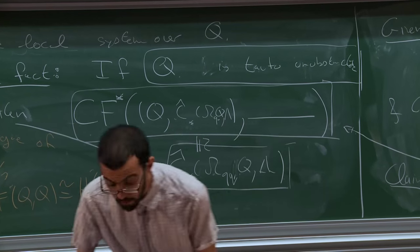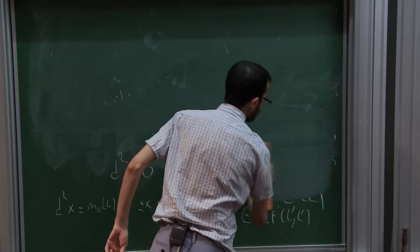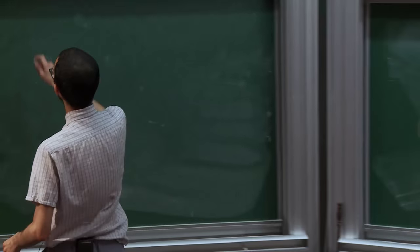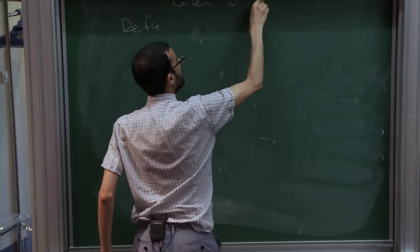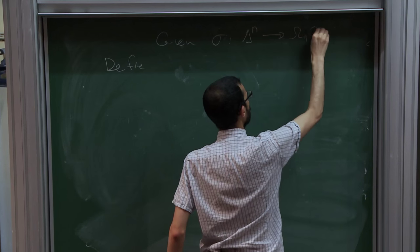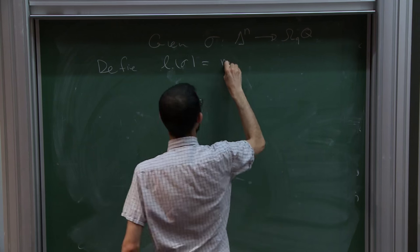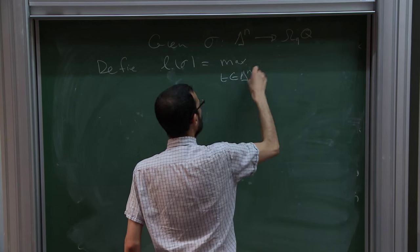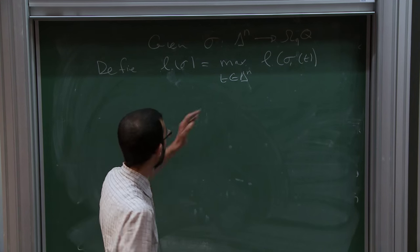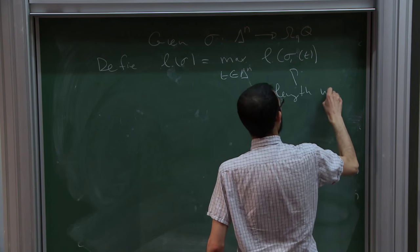First I will introduce something that is most natural from the point of view of symplectic topology, even though we will massage it to get something algebraically convenient. So given σ — which is a chain, maybe cubical, but today I'm going to just do singular — into the base loops. I want to define the length of σ to be the maximum over t in the domain of the length of σ_t. So this is a family of loops, with length taken with respect to a Riemannian metric.